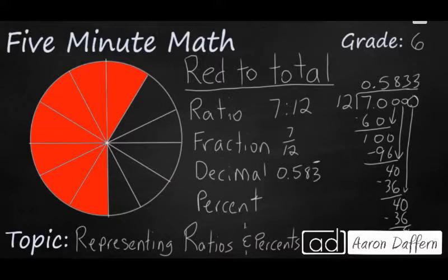And then your decimal changes to a percent by moving it over twice, once, twice. And so it's going to be 58.3 repeating percent, or you might like it to be 58 and a third percent.